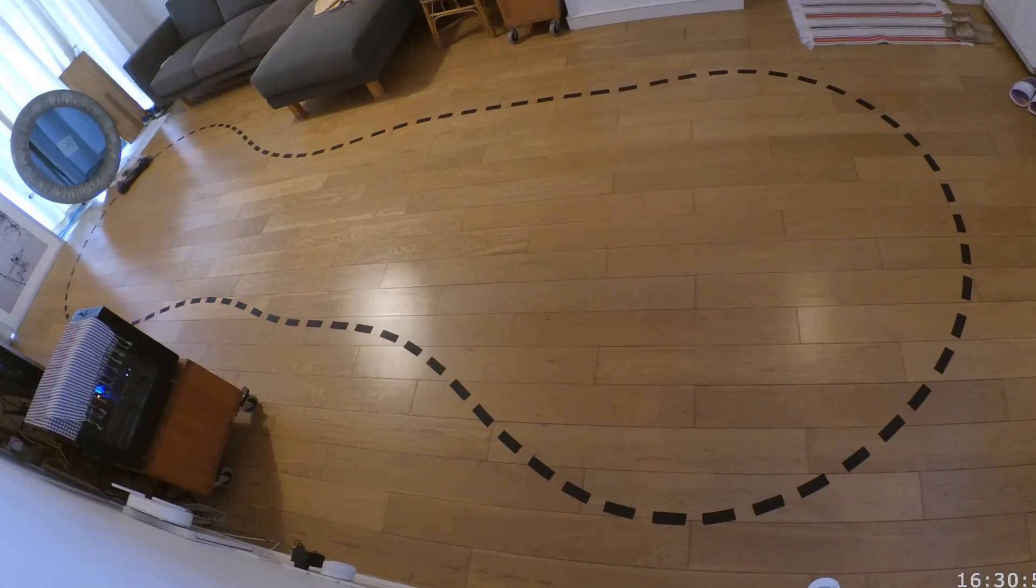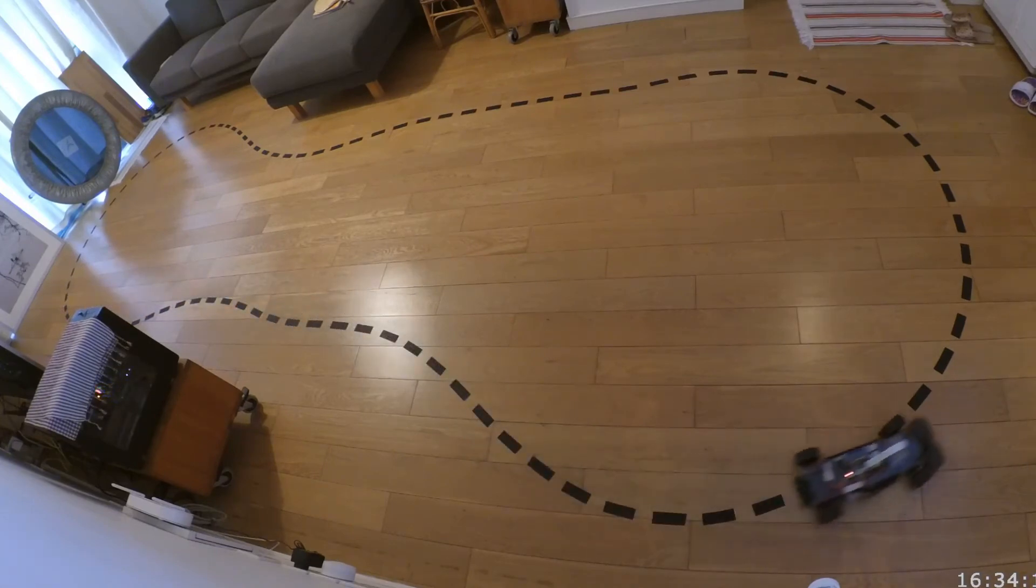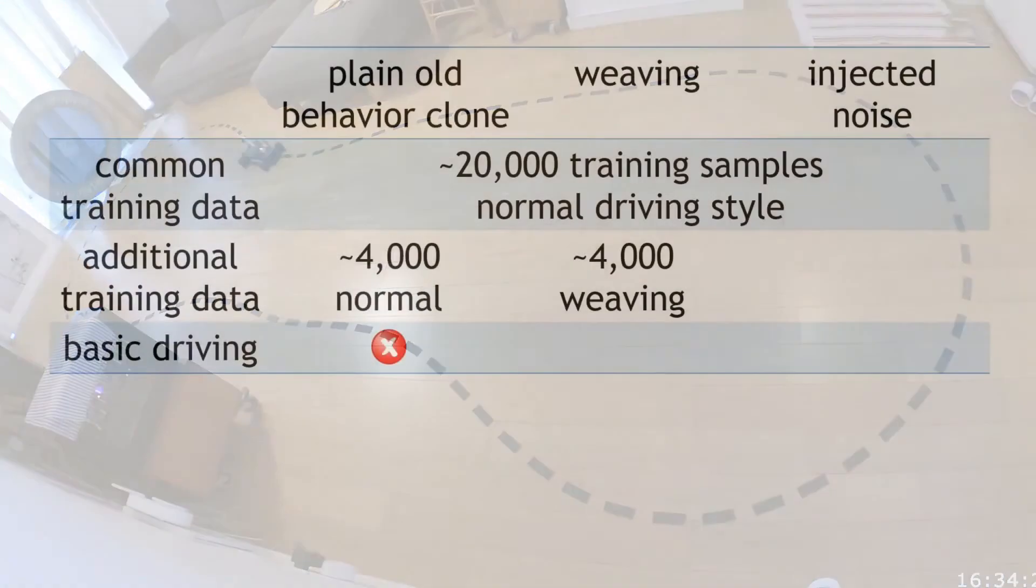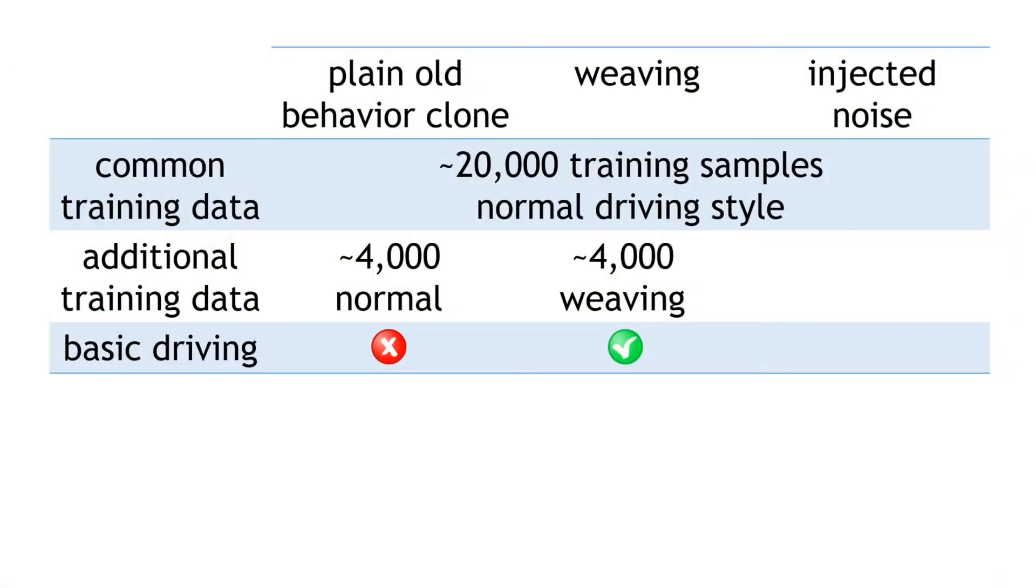Well, compared with the original behavior cloning approach, things seem a bit more stable and consistent. The policy can consistently drive around the track. There were no lapses in concentration. So in terms of basic driving, this policy seems okay.